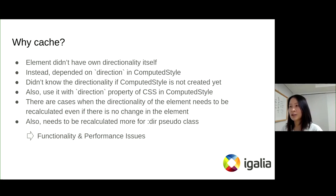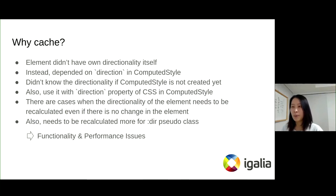We didn't know the directionality of the element if compute style is not created yet or failed. Also, we use it with the directionality property of the CSS in compute style. There are some cases when the directionality of the element needs to be recalculated even if there is no change in the element. Also, it needs to be recalculated more for the :dir pseudo-class implementation. So, we need to cache it for functionality and performance.